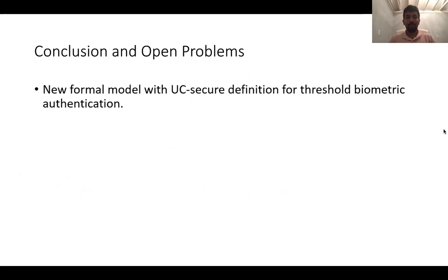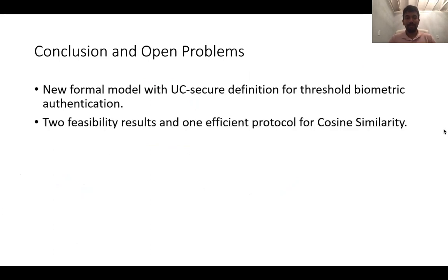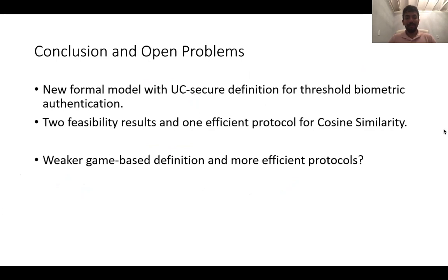Finally, to conclude, we have a new formal model for threshold biometric authentication with a UC secure definition. We have multiple protocols — two feasibility results and one efficient protocol for cosine similarity. Some open problems: Can we define a weaker game-based definition than the simulation-based one, and perhaps have more efficient protocols with respect to this weaker definition?